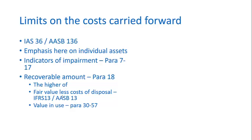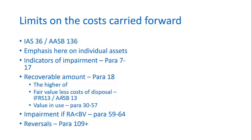Because it says the higher of, it may be that you can't determine fair value and simply have to calculate value in use — and the fact that you can't calculate fair value is not problematic in any way. If the recoverable amount is less than book value, then you need to do an asset impairment: you recognise an impairment expense and a reduction in the value of the asset, recognised as accumulated impairment. Please note that if circumstances change, it may be possible for an impairment to be reversed.